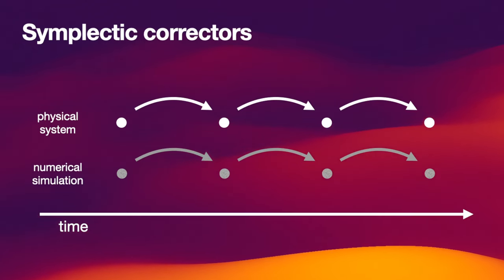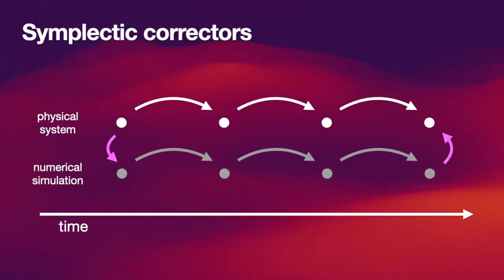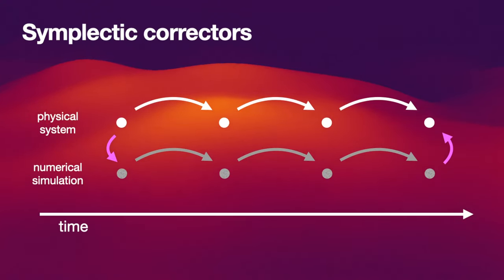And this leads to the error that we're seeing in the end. What these symplectic correctors do is they add a transformation at the very beginning and at the very end of the integration or whenever we need an output. What this transformation does is it's slightly perturbing the initial conditions so that we're starting from different initial conditions in our numerical simulation, and we're perturbing them in a very specific way, namely to make the integration later on more similar to that of the real physical system that we actually want to integrate.